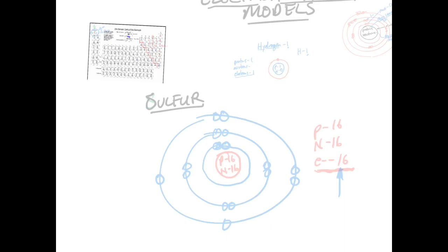And there we go — that's an electron configuration model of a sulfur atom. We also drew a model of a hydrogen atom. Any other atom you're asked to draw follows these exact same rules and procedures. Go ahead and start your worksheet using the periodic table in your book or the one on my desk.